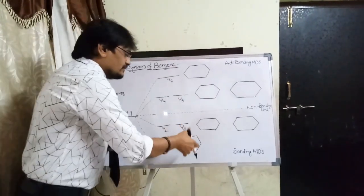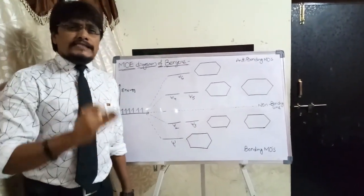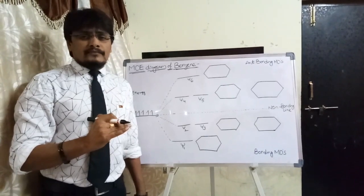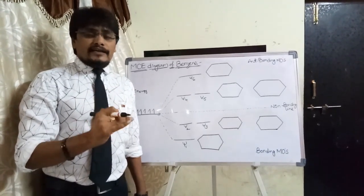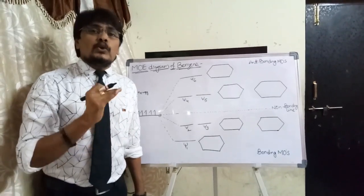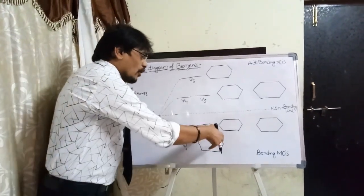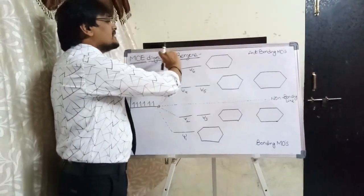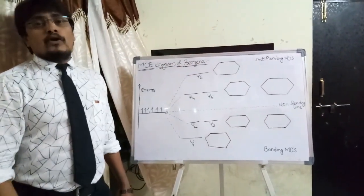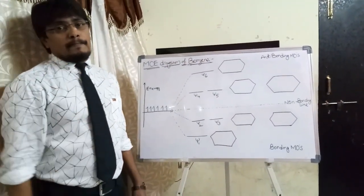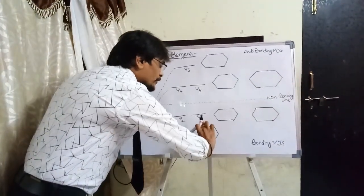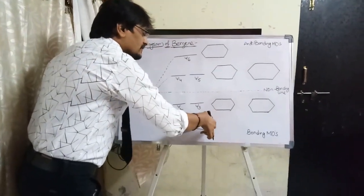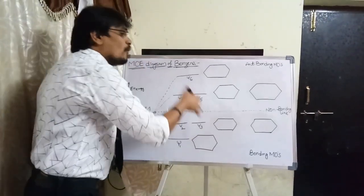Psi 1 is occupying the lowest energy level. Since it occupies the lowest energy level, the number of nodes present in it are zero — there is no node in this particular molecular orbital which occupies the lowest energy level of the molecular orbital energy diagram of benzene.